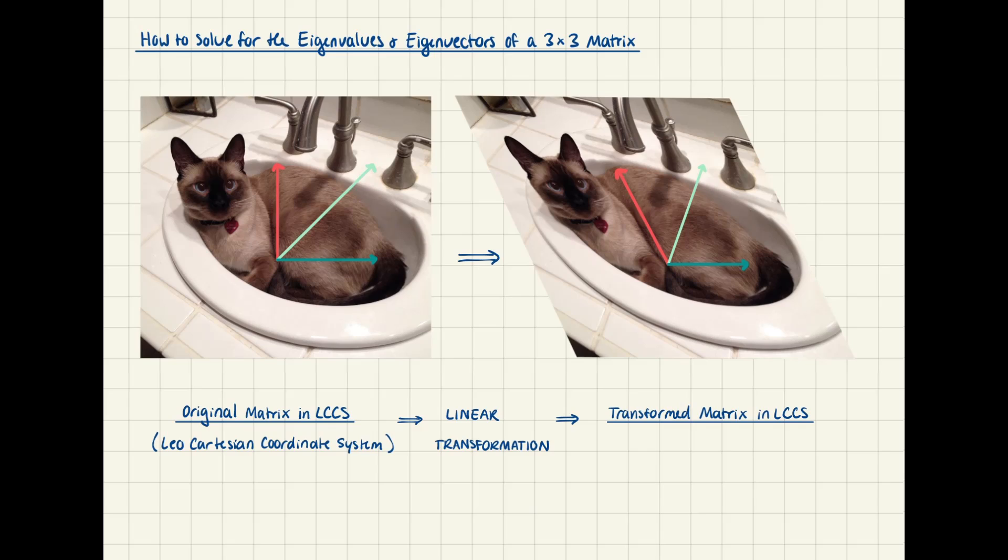So to recap, the eigenvector summarizes the directionality of our transform vector, and the eigenvalue provides the multiplier of its sized-up dimensions. If everything I just said makes zero sense, I'm very sorry, and I would recommend just doing some googling until it clicks.